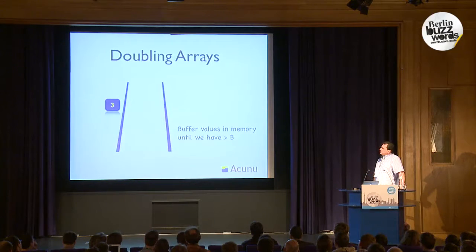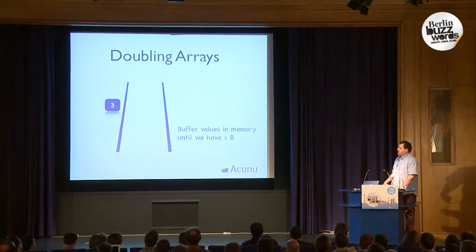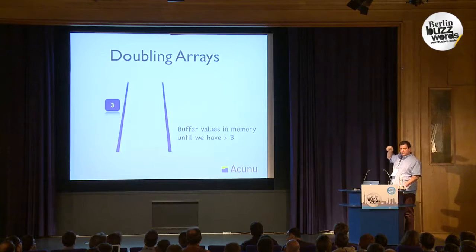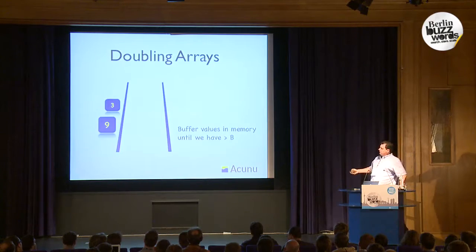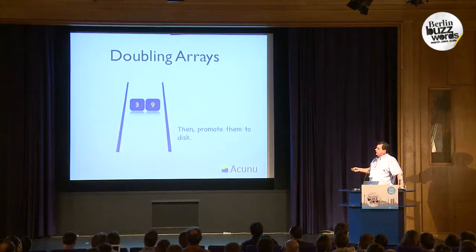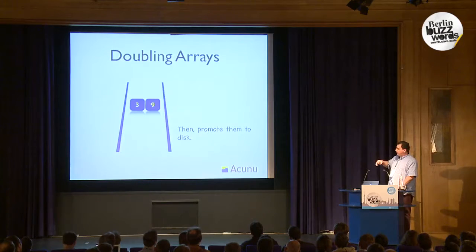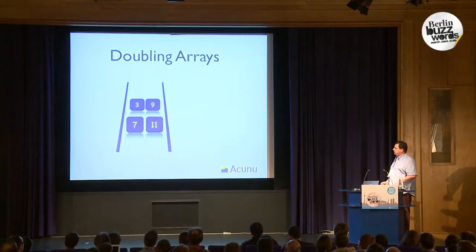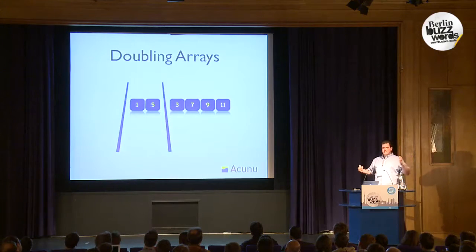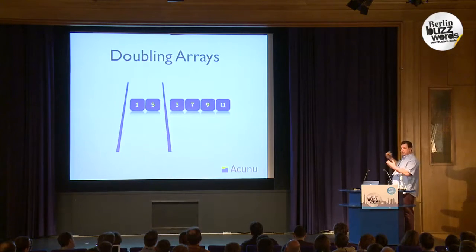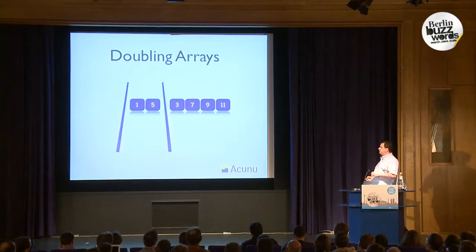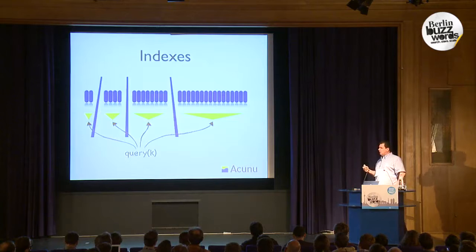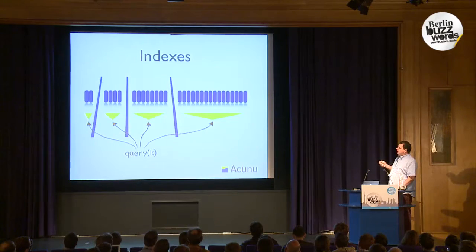As far as write optimization goes, Castle's algorithms are a little different than Cassandra's. We have this concept called doubling arrays. Picture memory on the left and disk slots moving to the right. We start buffering values up — just like Cassandra does — in these arrays. When we reach a point where it's full, we flush those to disk in sorted order. We continue flushing more to disk in sorted order until that second level's threshold is hit, and then we promote them to the next level on disk. As the arrays get promoted further, they double in size — that's why they're called doubling arrays. Like Cassandra's log-structured merge tree, a merge is needed to read, so each level is indexed to speed up that search.